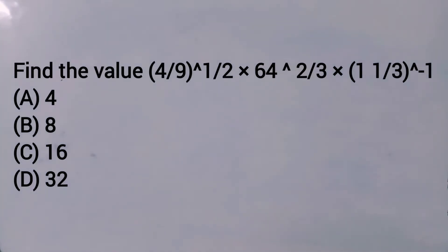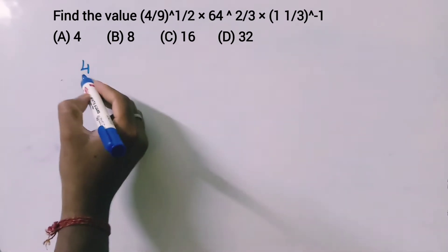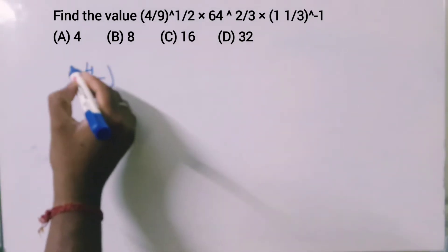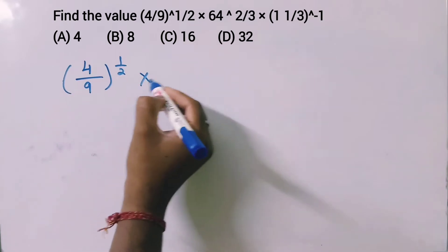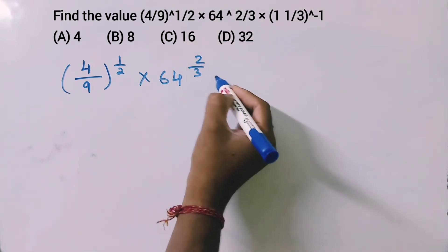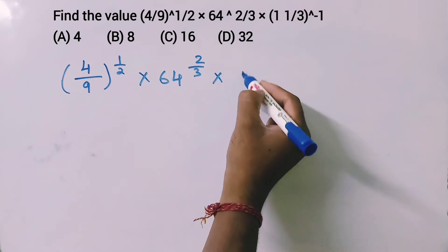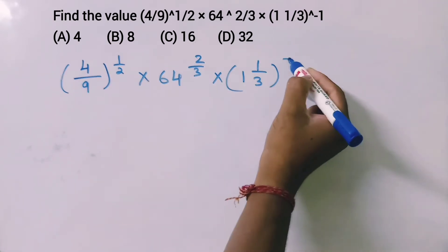Find the value of 4 by 9 to the power 1 by 2, into 64 to the power 2 by 3, into 1 and 1 over 3 to the power minus 1.